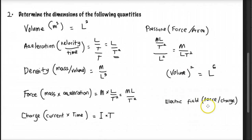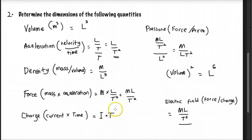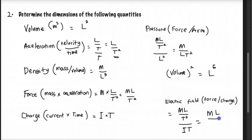The last one is the electrical field, which is force divided by charge. Force is ML over T² and charge is IT. Dividing these gives the final result for electrical field as ML over IT³. Note that the I here is current, not T.